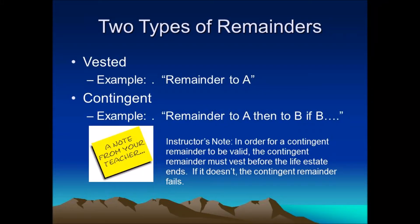If that is not enough, we have to worry about the remainder part of the grant as well. A remainder is a right to some type of future ownership. When we talk about remainders, there are actually two types: you're either going to have a vested remainder or a contingent remainder.